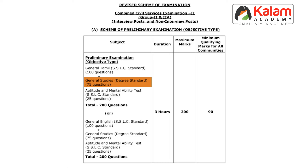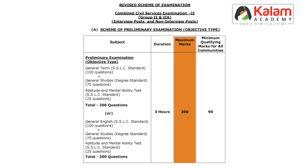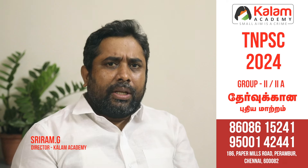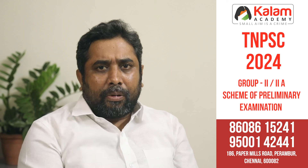Overall, there are 100 questions in General Studies, 100 questions in General Tamil, and 100 questions in General English — totaling 200 questions worth 1.5 marks each, giving 300 total marks. The cut-off will vary depending on the toughness and easiness of the question paper.